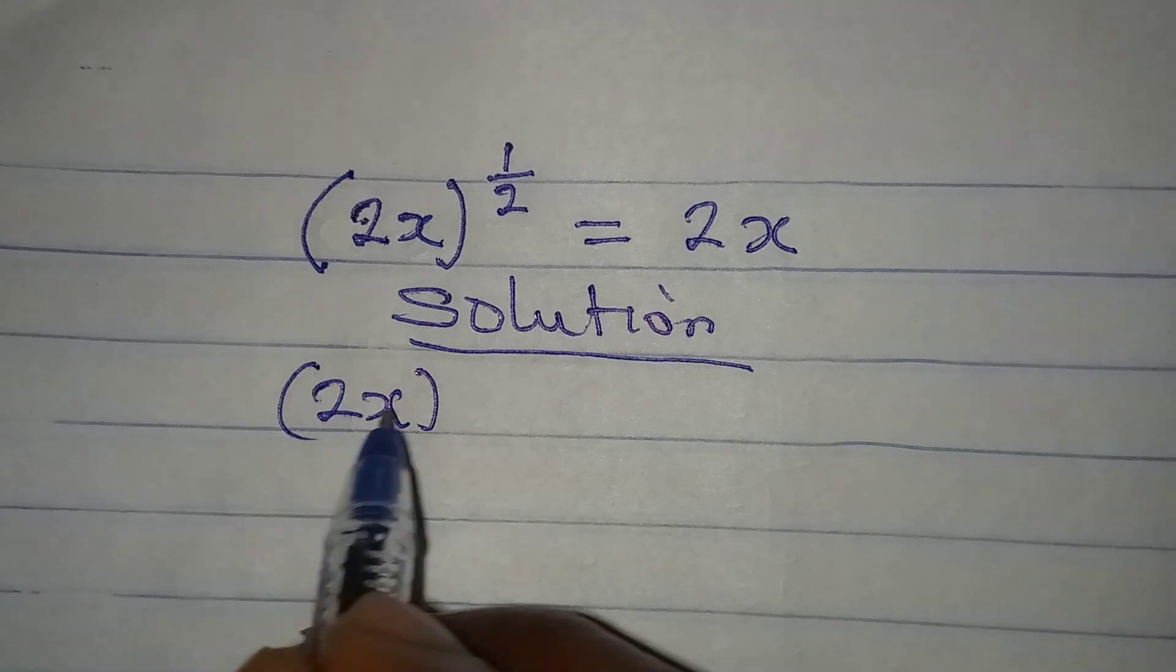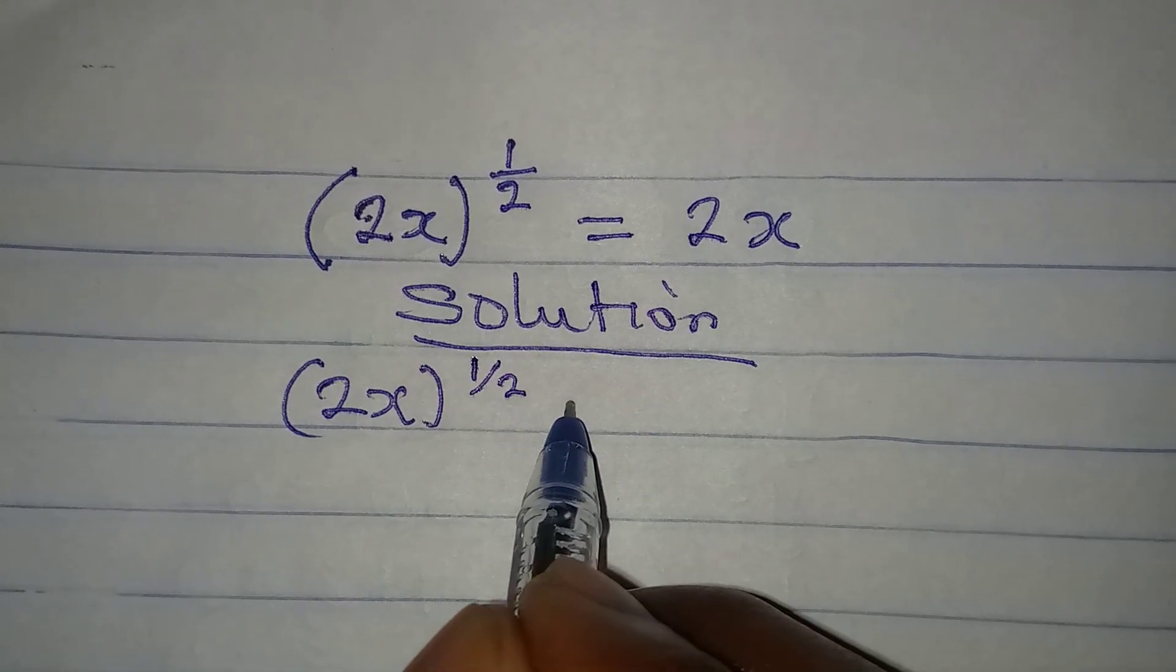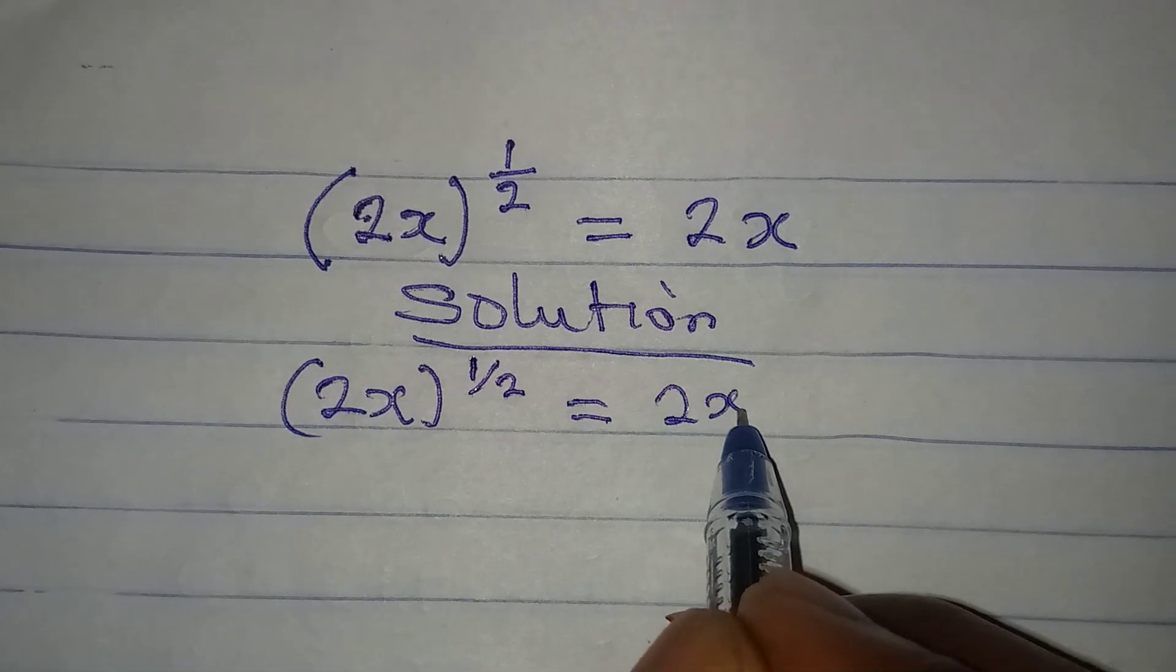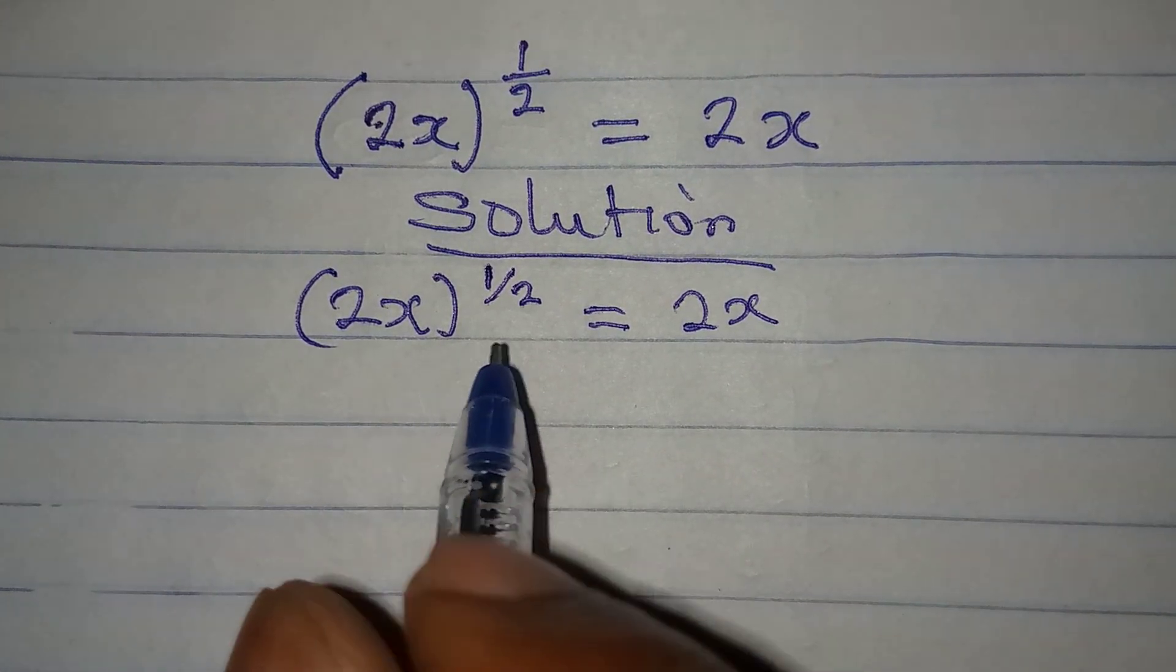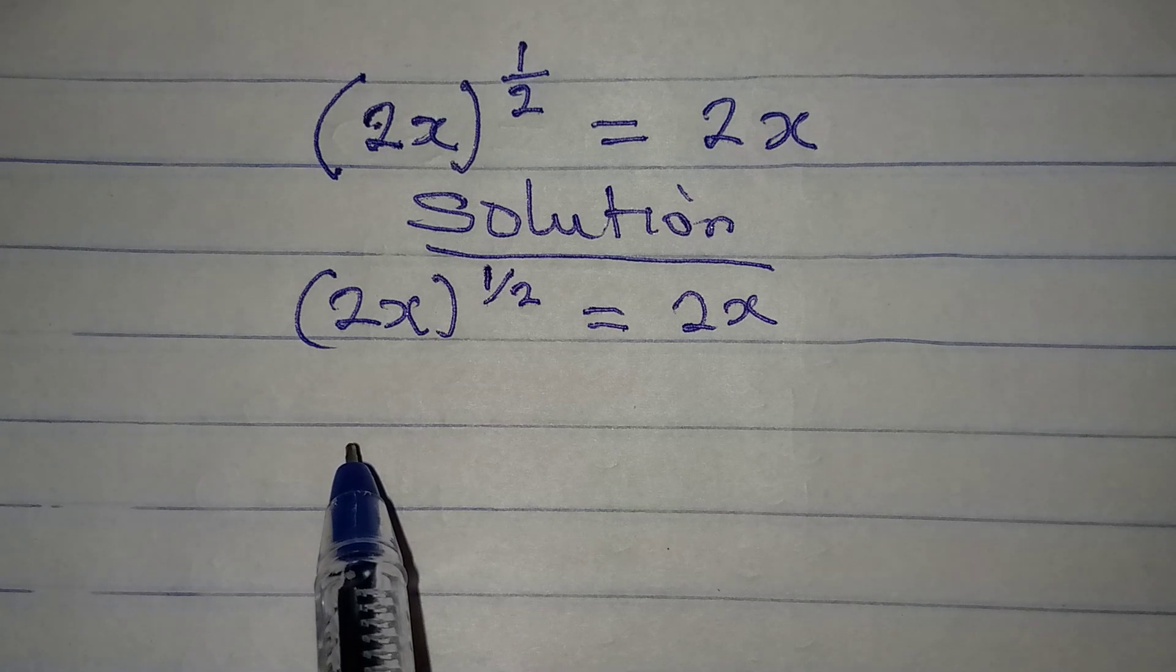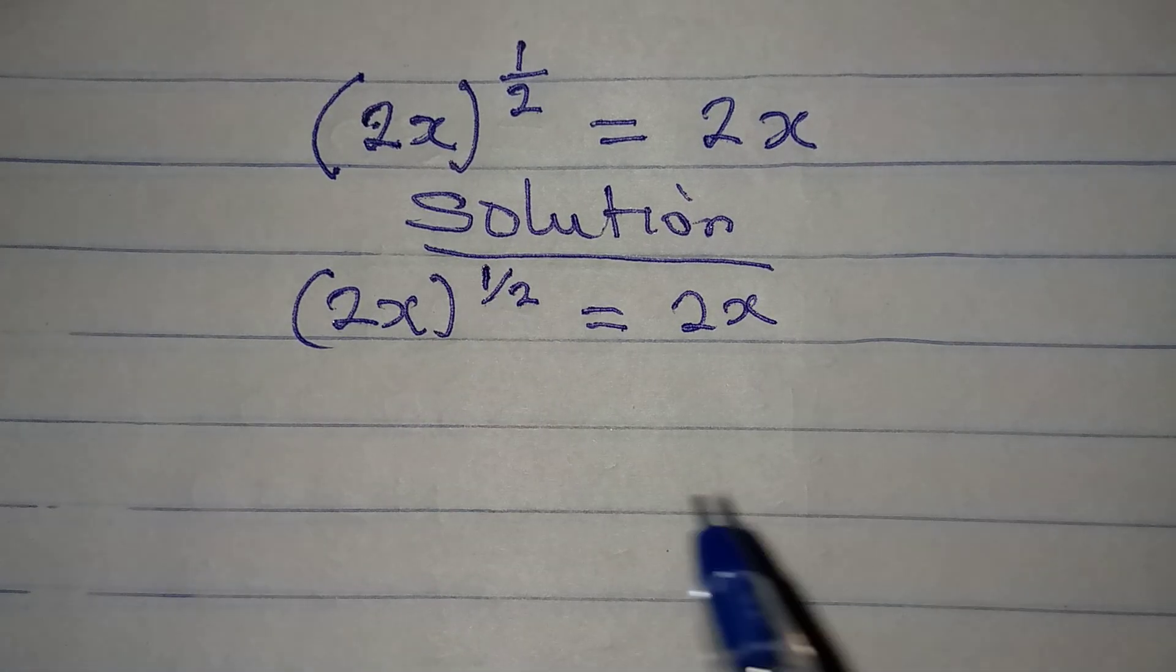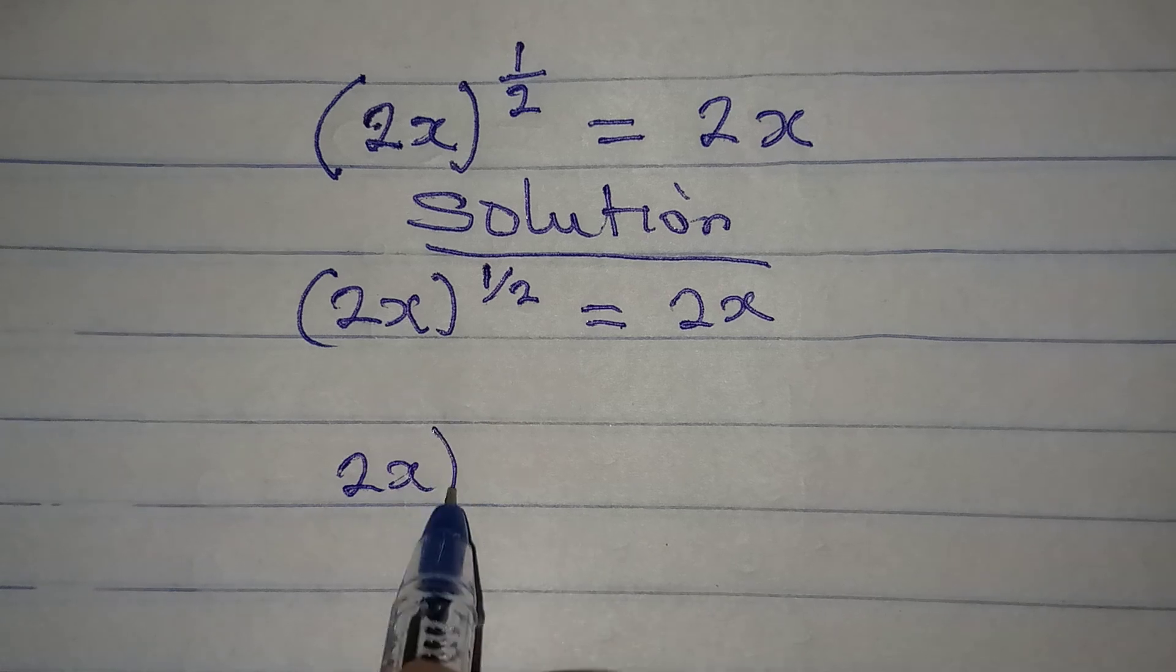We have 2x to the power of 1 over 2, which is equal to 2x. From here, to remove this power, first we will multiply the power by 2.